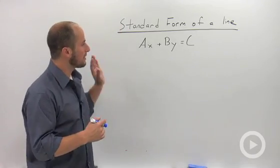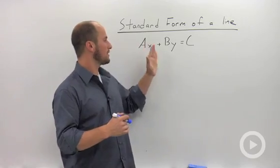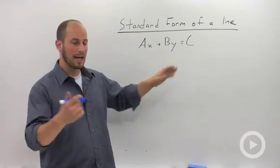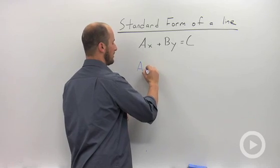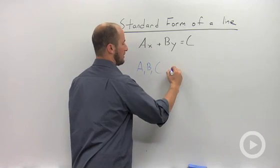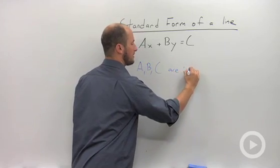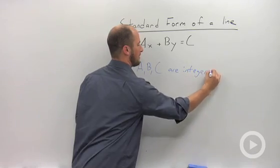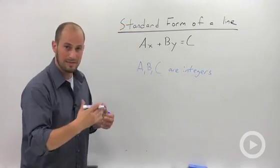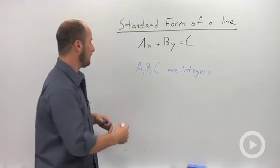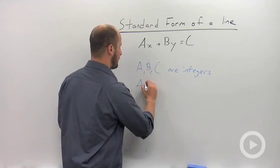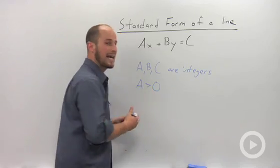So what standard form is is an equation of the line Ax + By = C, and what has to happen for this form to hold true is A, B, and C have to be integers, so they have to be whole numbers. B and C can be positive or negative, but we also know that A has to be greater than 0.